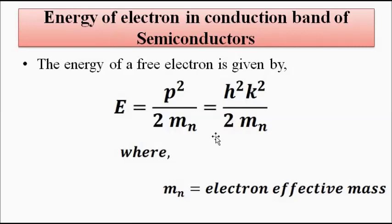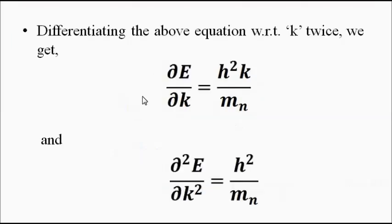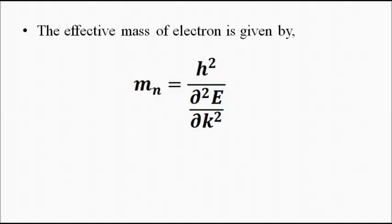To find the value of m_n, which keeps changing, we can differentiate the energy twice with respect to the wave vector. The first differentiation gives ℏ²k/m_n, and the second differentiation gives ℏ²/m_n. Therefore, m_n equals ℏ² divided by d²E/dk².